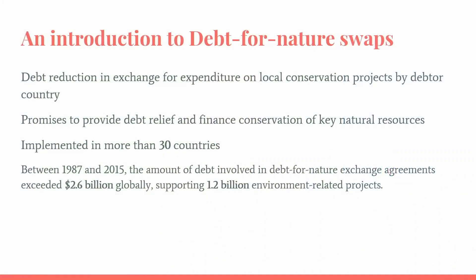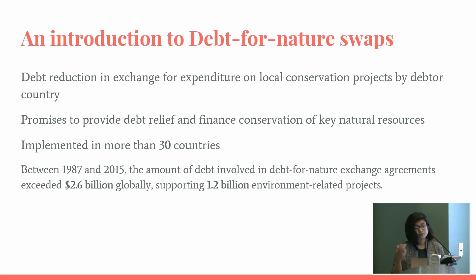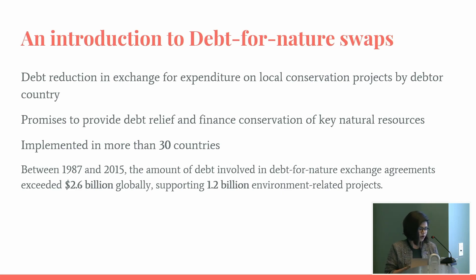Debt for nature swaps are a financial instrument that allows countries to free up their fiscal resources from servicing debt and redirect those resources into funds for conservation. They're basically a package deal that aims to solve debt distress, reduce debt burden, and help solve the environmental crisis by a single maneuver. This started with the Latin American crisis — the first ever debt for nature swap was signed by Bolivia in 1987. Since then, it has been implemented in over 30 countries, with 1.2 billion in conservation projects exceeding $2.6 billion globally.